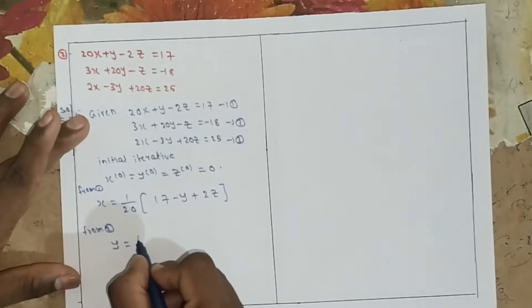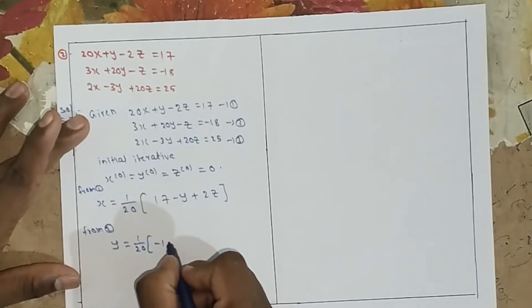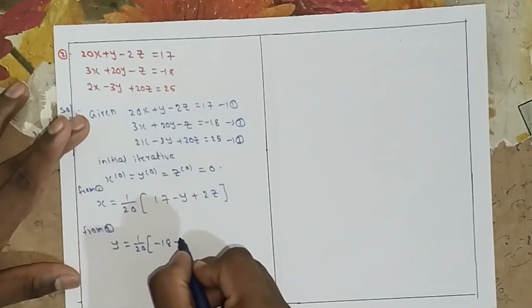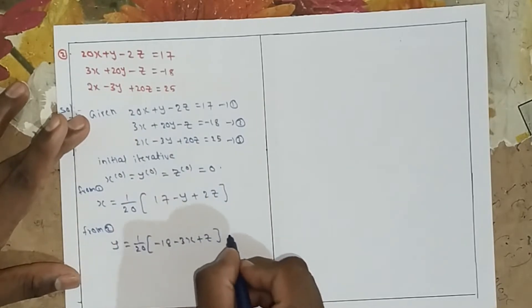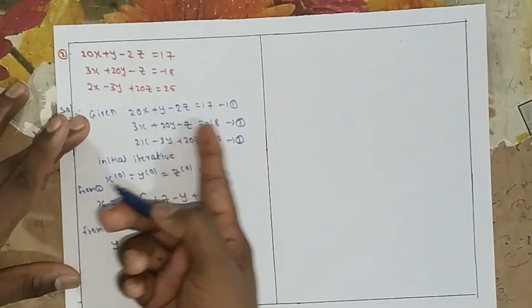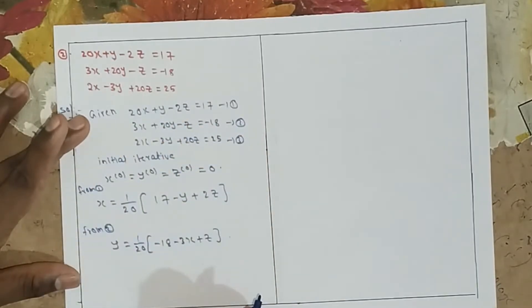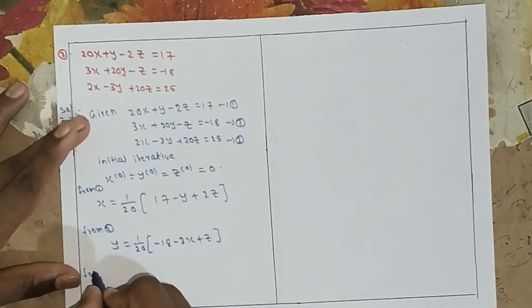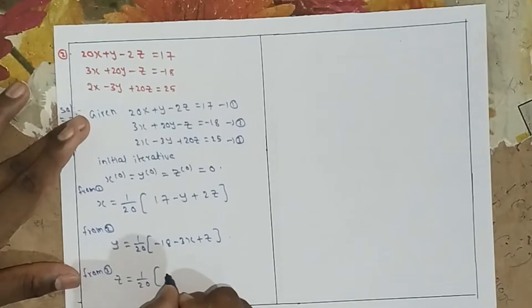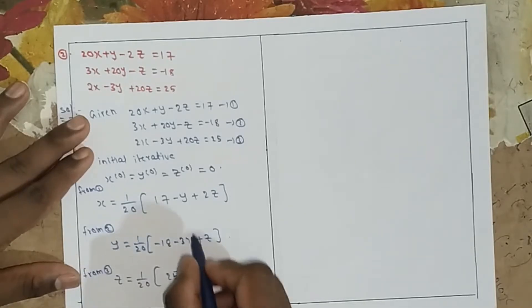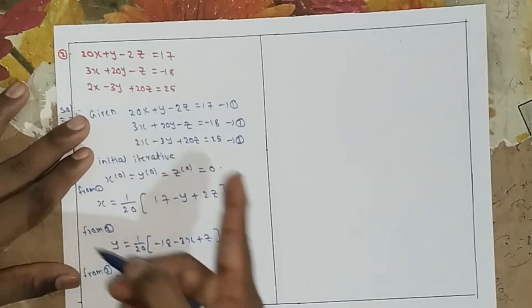From equation 2: y equals 1 by 20 into (minus 18 minus 3x plus z). And from equation 3: z equals 1 by 20 into (25 minus 2x plus 3y).